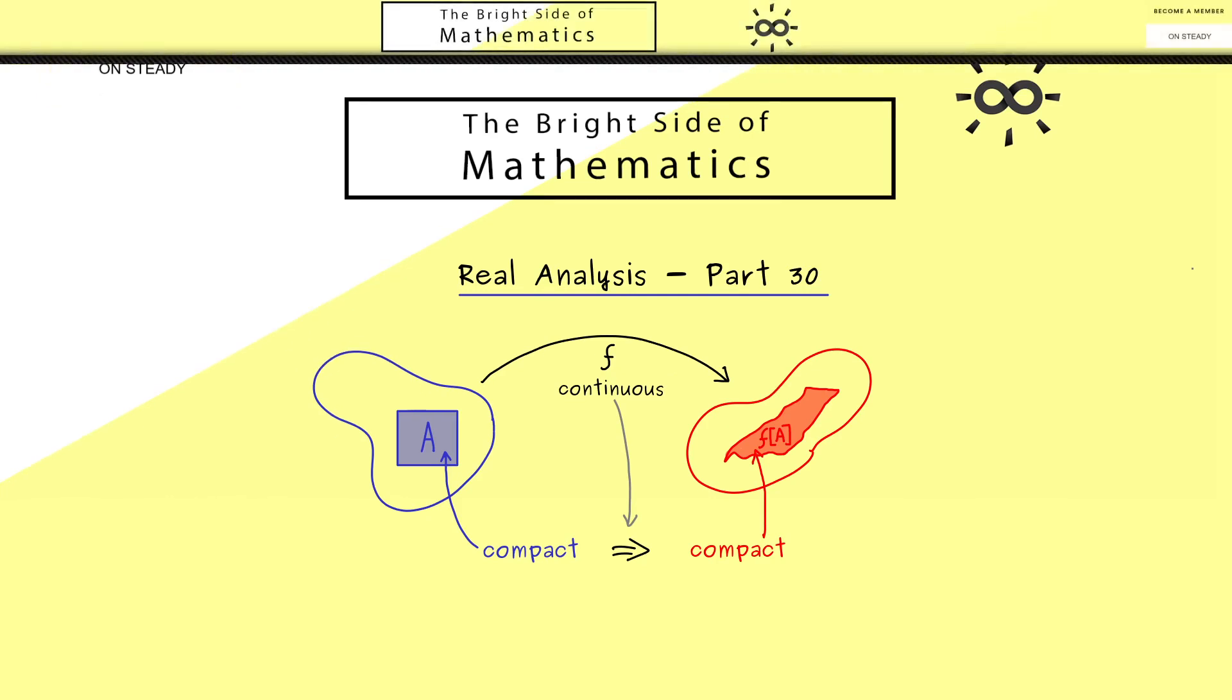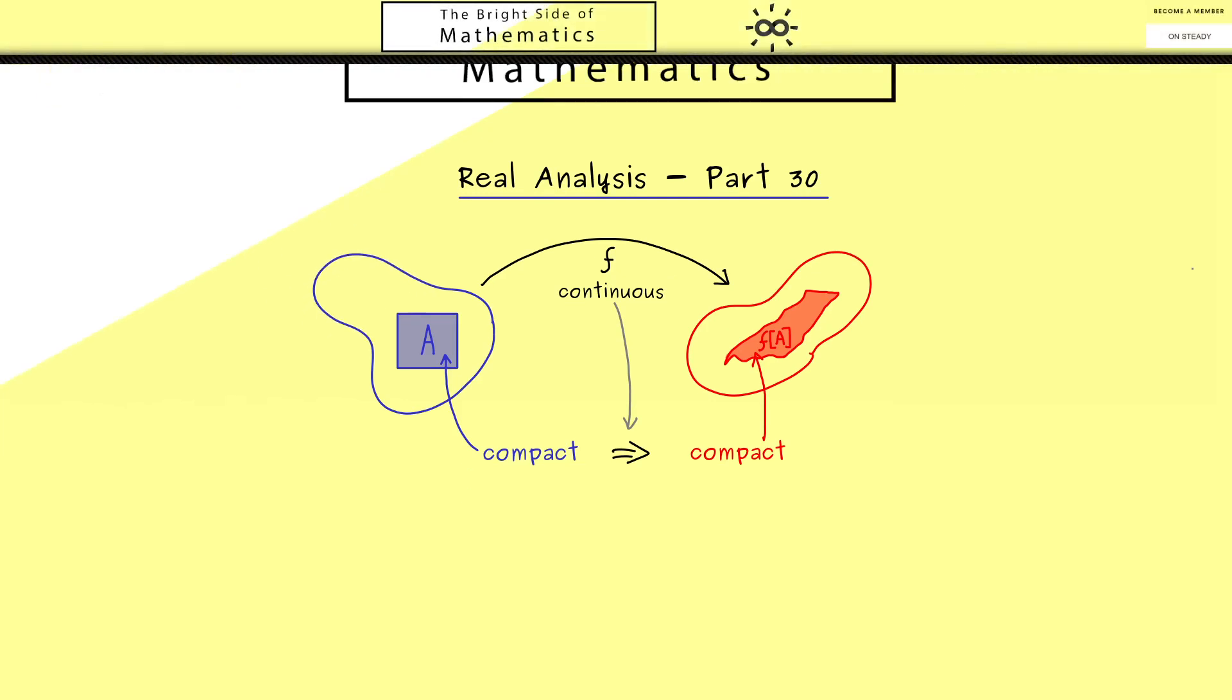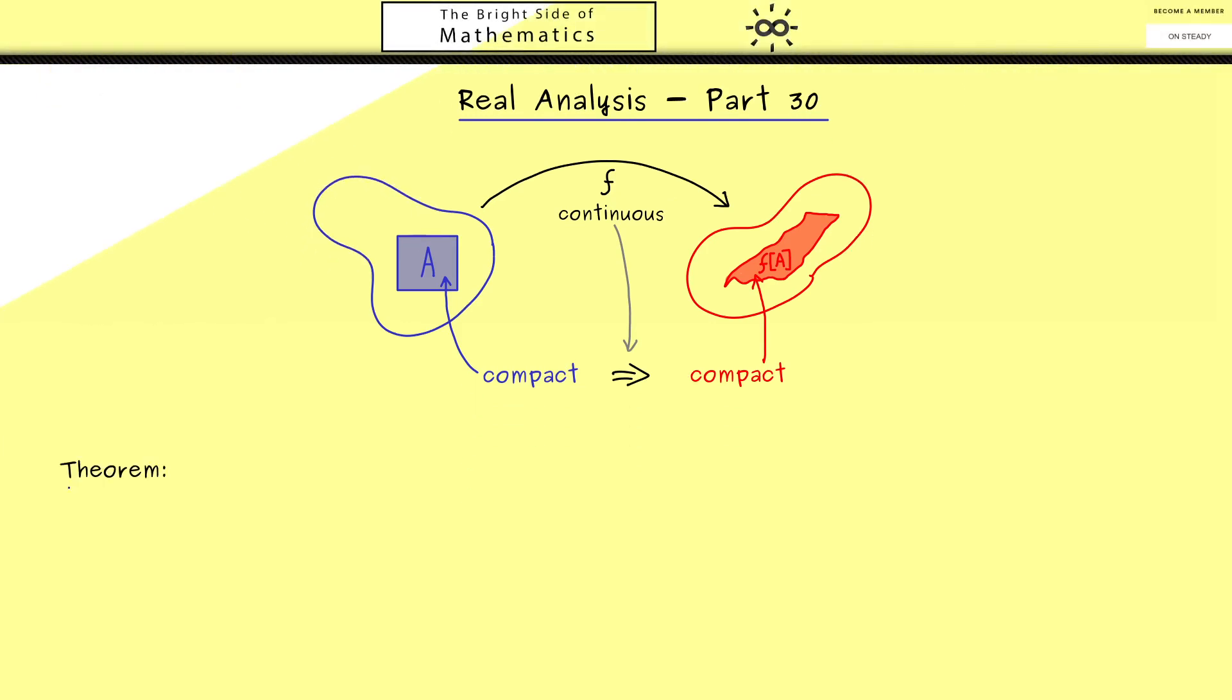This is the topic for today so let's formulate this with a theorem. Here in our course I always used I for the domain of a function. And now this I as a subset of R should be compact. Moreover the function f we consider here should be continuous at all points. So these are the assumptions we need and then our conclusion is that the image of I is also compact.